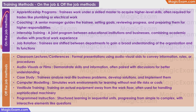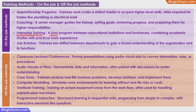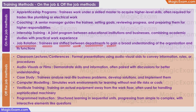In apprenticeship programs, trainees work under a skilled master to acquire higher-level skills, often required for trades like plumbing or electrical work, where on-the-job training is absolutely essential. In coaching, a senior manager guides trainees by setting goals, reviewing progress, and preparing them for higher responsibilities. In internship training, a joint program is organized between educational institutions and businesses, combining academic studies with practical work experience. With job rotation, trainees are shifted between different departments to gain a broader understanding of the entire organization and its different functions.